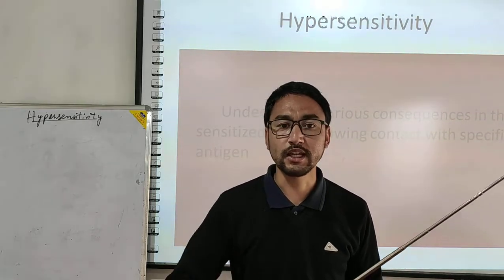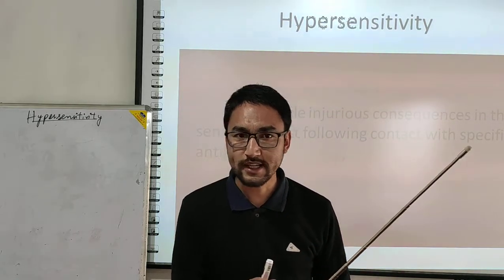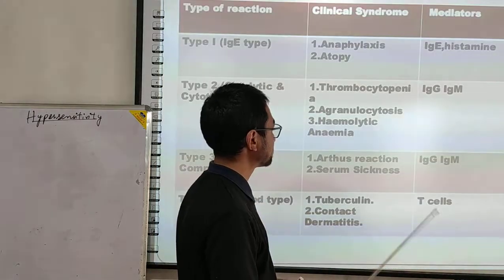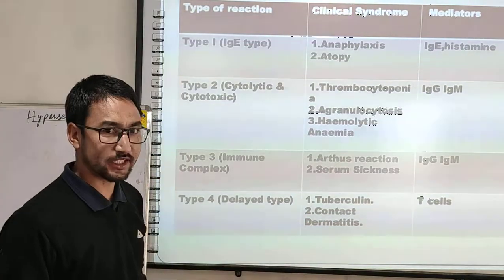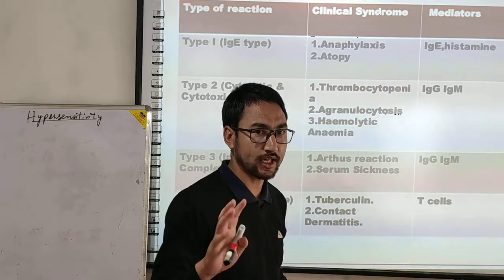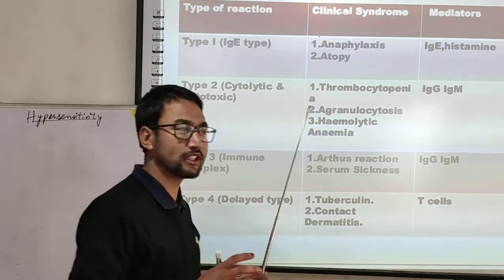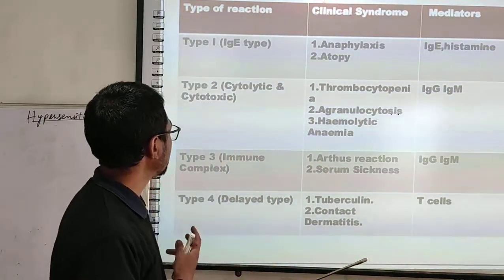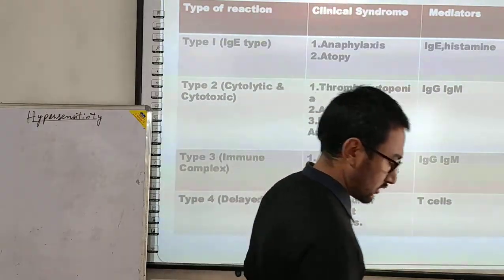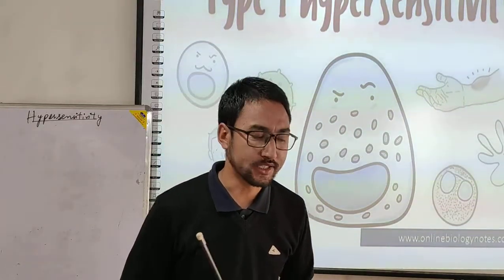This reaction to the immune knowledge we call hypersensitivity. This hypersensitivity reaction is basically of four types. We will discuss all these in detail one by one: Type 1, Type 2, Type 3, and Type 4. So moving on to Type 1 hypersensitivity reactions.